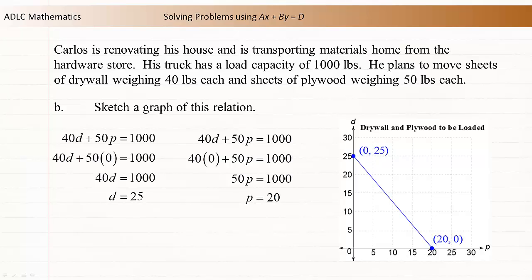Now use a straight edge to draw a line through the points. Finally, let's label the relation 40d plus 50p is equal to 1,000. If we assume that Carlos is only going to carry full sheets of drywall and plywood, the relation uses discrete values. Although we've used a line to represent the relation instead of a series of points, we'll keep the fact that this relation is discrete in the back of our minds for now.